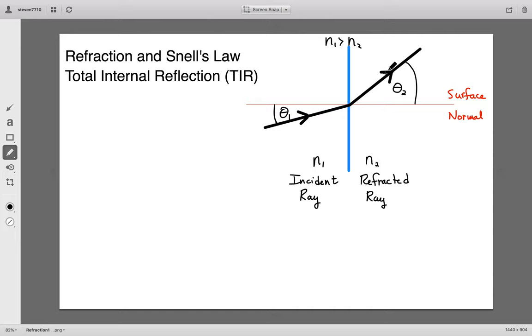When you do that, all of a sudden now, your refracted angle ends up being larger than your incident angle. And the idea here is as we keep increasing this incident angle, the refracted angle will eventually bend to be just along the interface itself.